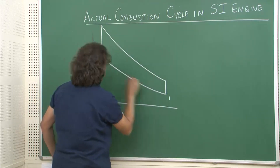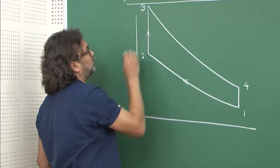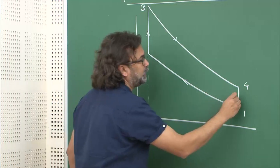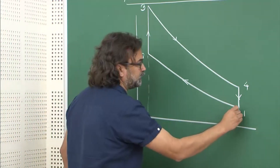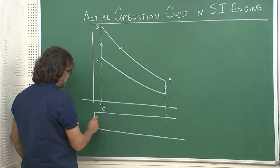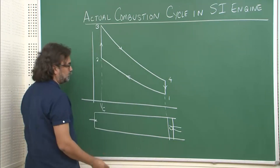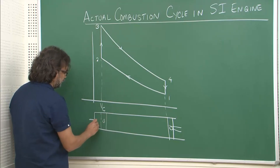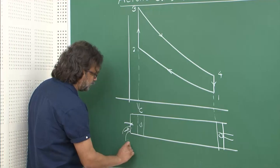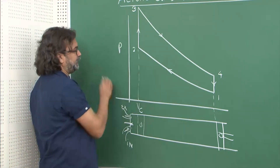I am drawing an ideal Otto cycle with the compression stroke, heat input at constant volume, the clearance volume V_clearance, the adiabatic expansion process, and then heat rejection again at constant volume. This is the BDC — the bottom dead center. I can also sketch the cylinder with a spark plug, the TDC position, the clearance volume, inlet valve, and exhaust valve. This is the PV diagram for the ideal cycle.